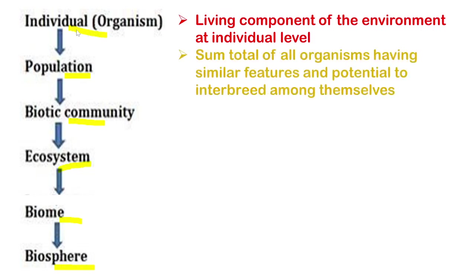Individuals of the same type, sharing the same features and having the ability to breed among themselves and produce fertile offspring that can further propagate their own kind, constitute a population. Examples include human population, population of tigers, elephants, paddy plants, coconut trees, and grass plants of a particular variety.